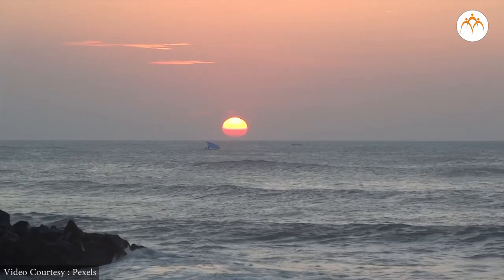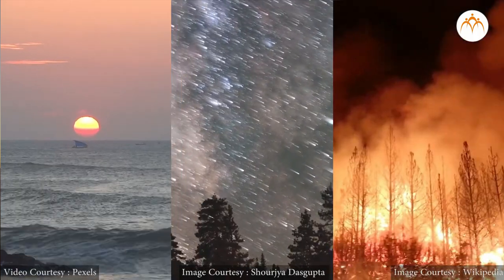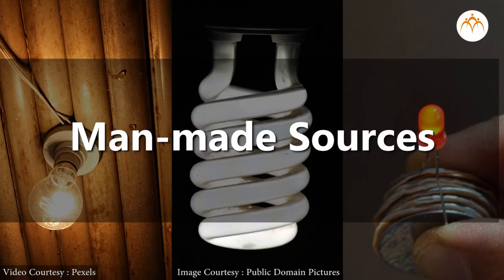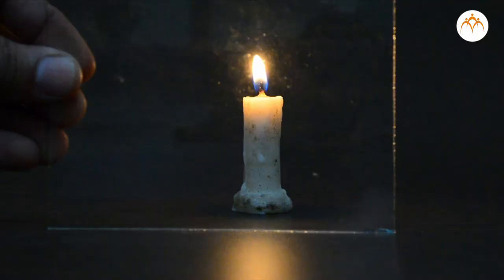Summary. Light is another form of energy. We looked at natural as well as artificial sources of light. Objects through which light passes are called transparent objects.